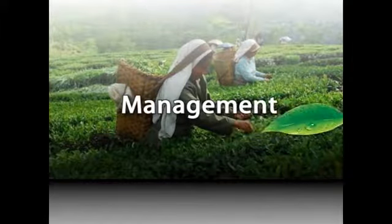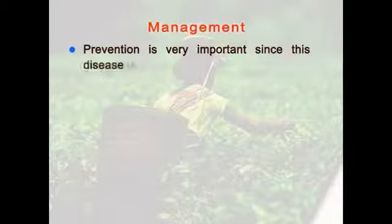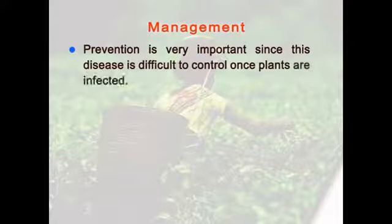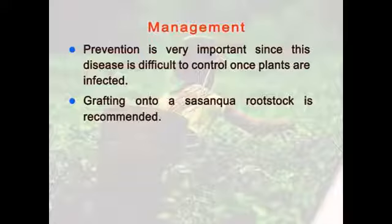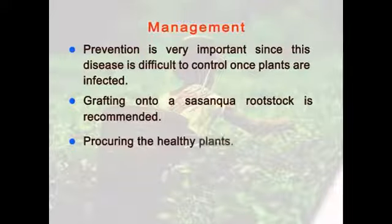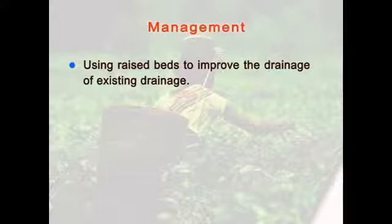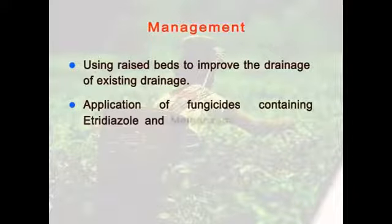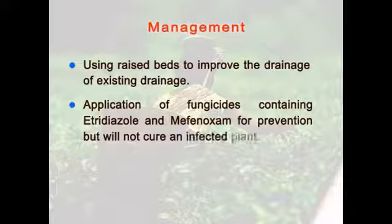Now let's see how to manage the different root diseases. Prevention is very important since these diseases are difficult to control once plants are infected. Grafting onto a rootstock is recommended. Procuring healthy plants and choosing locations having good drainage for planting, and using raised beds to improve drainage, are important measures. Application of fungicides containing etridiazole and mefenoxam for prevention will not cure an infected plant.